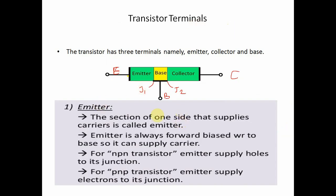How many terminals does a transistor have? Three terminals: emitter, base, and collector. The emitter-base junction is called the J1 junction. The base-collector junction is called the J2 junction. The section on one side that supplies carriers is called the emitter.